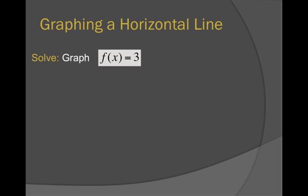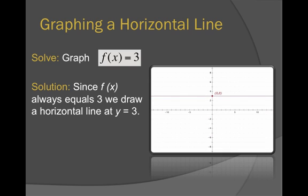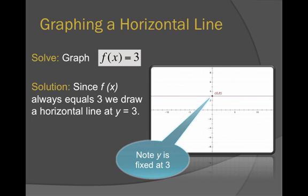That's a clue. It is a function. A horizontal line is a function and passes the vertical line test. Since f(x) always equals 3, we're going to draw a horizontal line at y equals 3. Note that y is fixed at 3.